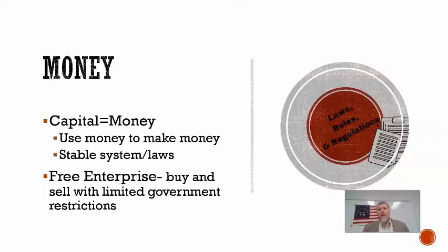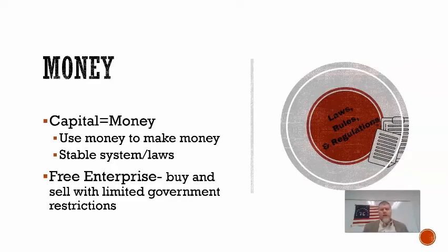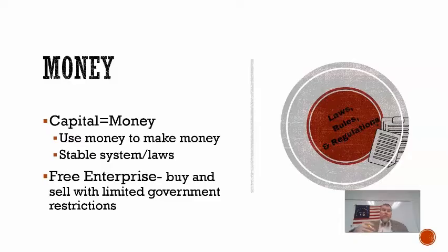Textiles is one of the first things to really be part of the factory system. The first thing we see here is money — you've got to have money or capital to build factories. You can raise that money by pooling the resources of many people together. You may have a group of investors, usually friends and people who trust you. Along with that, you've got to have a stable system of laws, because people aren't going to invest if the rules will dramatically change and create uncertainty.